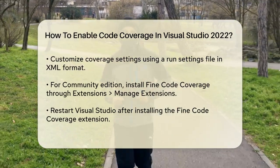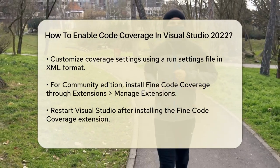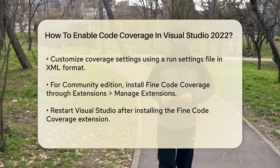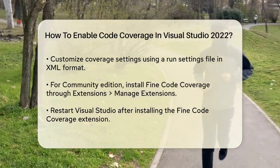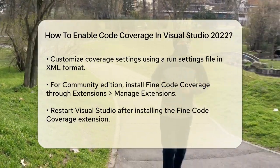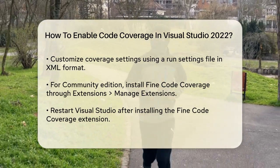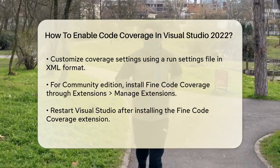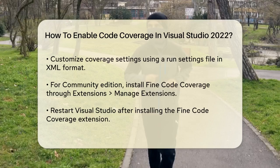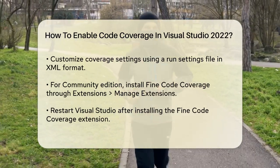By default, covered code is highlighted in light blue. To customize your code coverage settings, you can use a Run Settings file. Add a new XML file to your solution, name it something like codecoverage.runsettings, and configure it according to your needs. For example, you can specify different formats like Cobertura or XML for the coverage data.